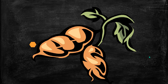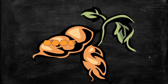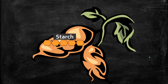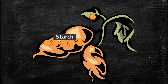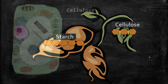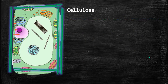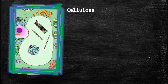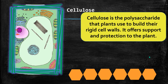During photosynthesis, as the plant builds glucose monosaccharides, it can save some of that as starch — like saving energy. And it also uses glucose to build its cell walls. When you look at a leaf, those plant cells have cell walls made of cellulose. These rigid cell walls in a plant are made from the polysaccharide called cellulose.